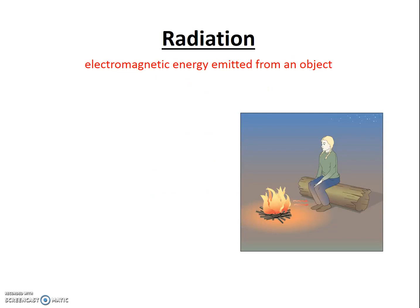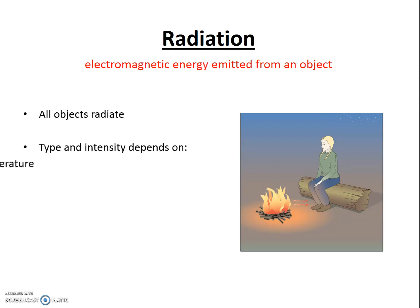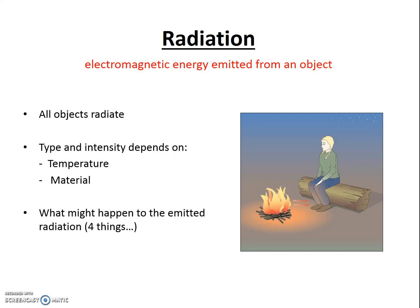For a quick review on radiation: all objects radiate, and the type and intensity of that radiation depends on the temperature of the object and the material. The Sun is very hot, and thus it tends to emit very shortwave radiation. You and I and the Earth are quite cool compared to the Sun, and thus we emit longer wave radiation — thermal infrared. There are four things that can happen to radiation as it travels through our atmosphere: it can be absorbed, reflected, scattered, or transmitted.